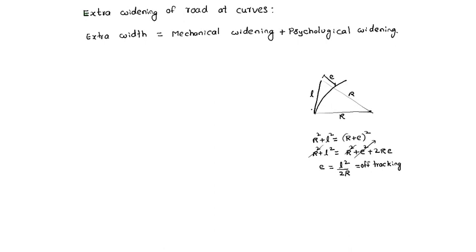If the number of lanes is N, then extra width = N × L²/2R for mechanical widening, plus psychological widening, which is empirical: V divided by 9.5√R.